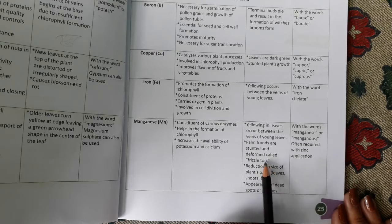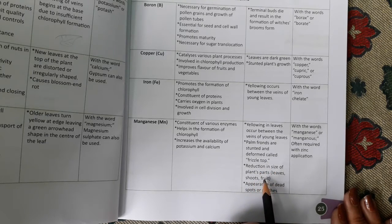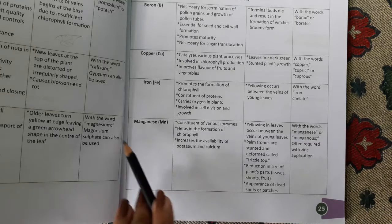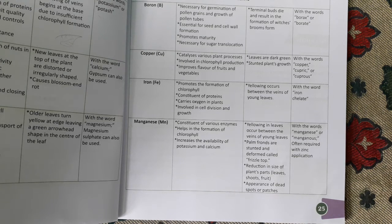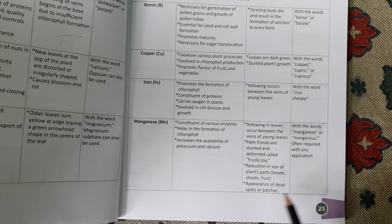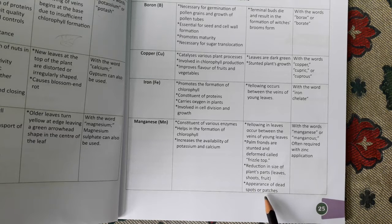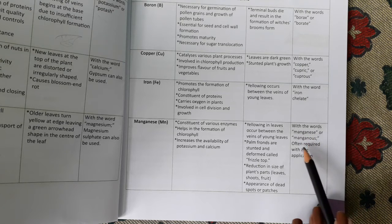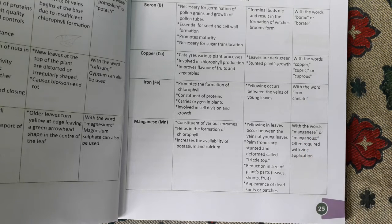Fronds and stems are deformed, called frizzle top. There is reduction in size of plant parts — leaves, shoots — and appearance of dead spots and patches. Manganese is often required together with zinc application as a fertilizer source.